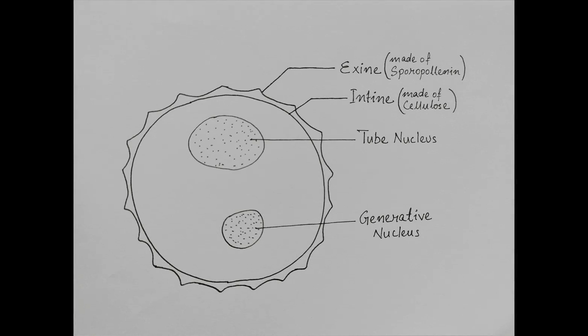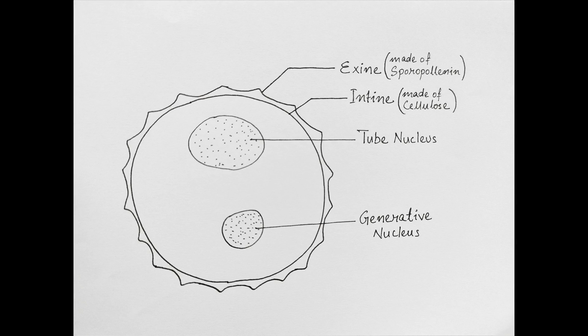Generally speaking, a mature pollen grain has a double wall which encloses a cytoplasm along with a tube or vegetative nucleus and a generative nucleus.